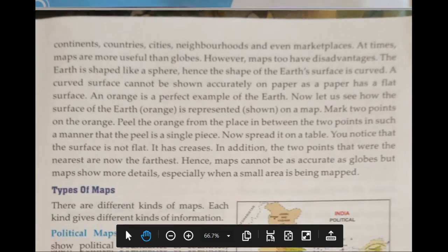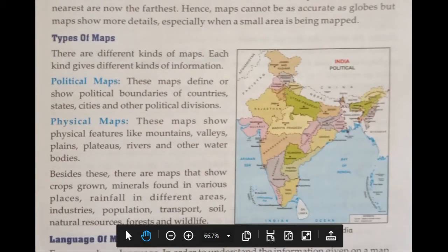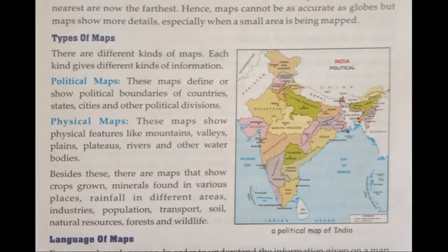Let's move to types of maps. There are different kinds of maps, and each kind gives different kinds of information. Political maps define or show political boundaries of countries, states, cities, and other political divisions.